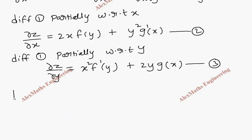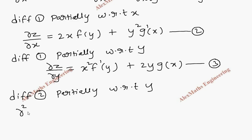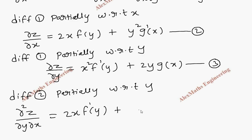Now let's take the second expression and differentiate it partially with respect to y. We get dou square z by dou y dou x equal to: x is treated as constant, so 2x is constant and the derivative of f of y is f dash of y. Then x is constant so g dash of x is written as it is, and y square derivative is 2y. This is our fourth expression.